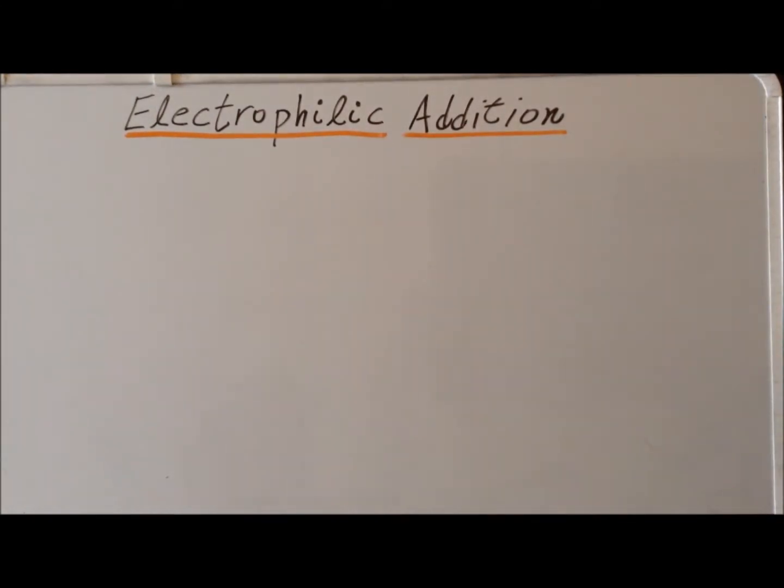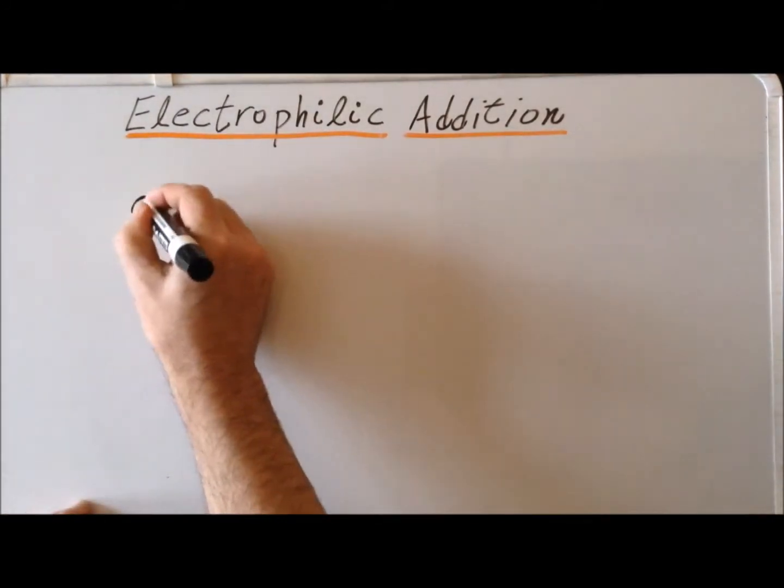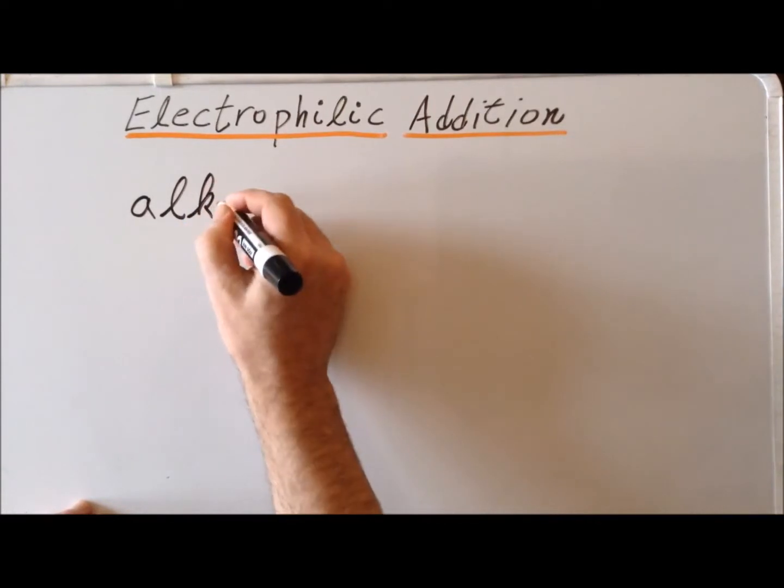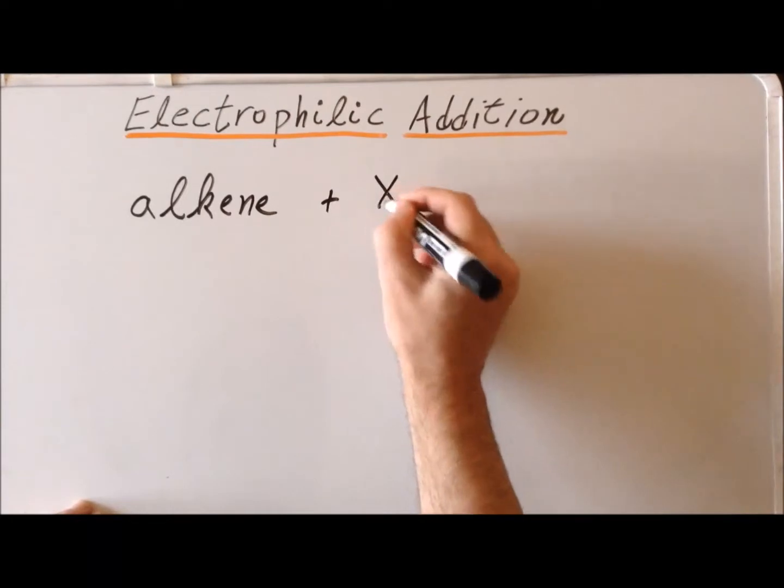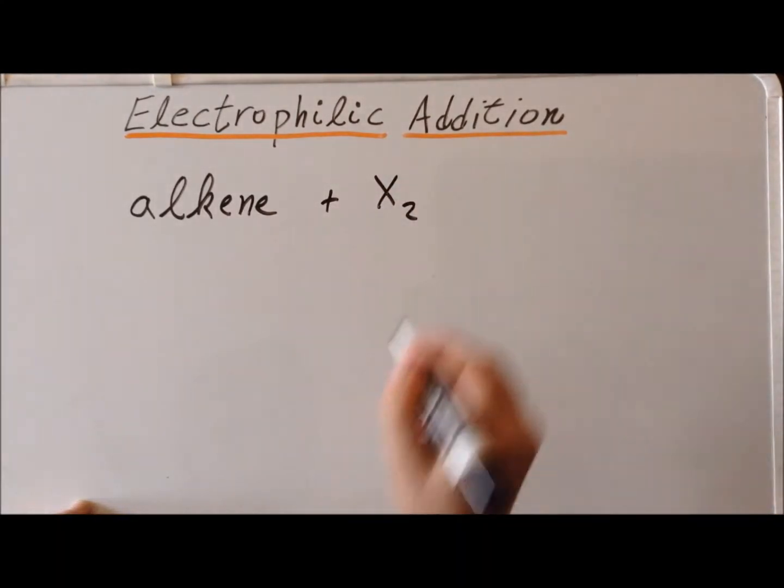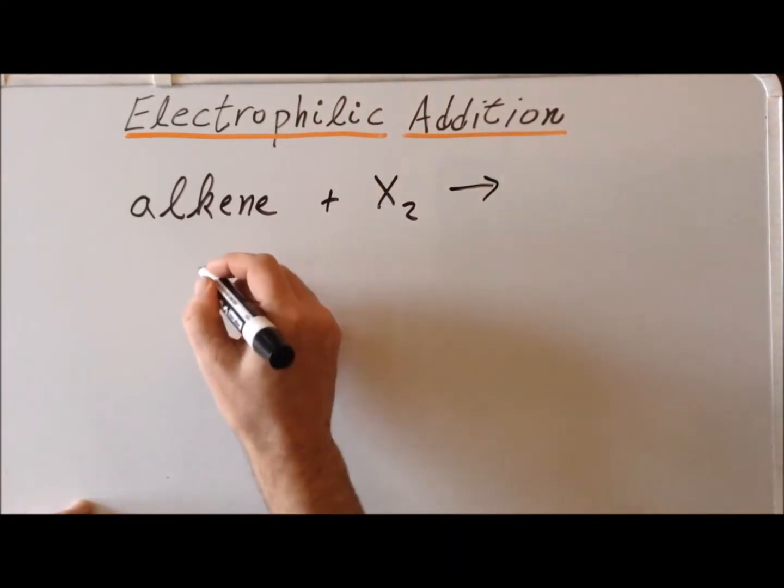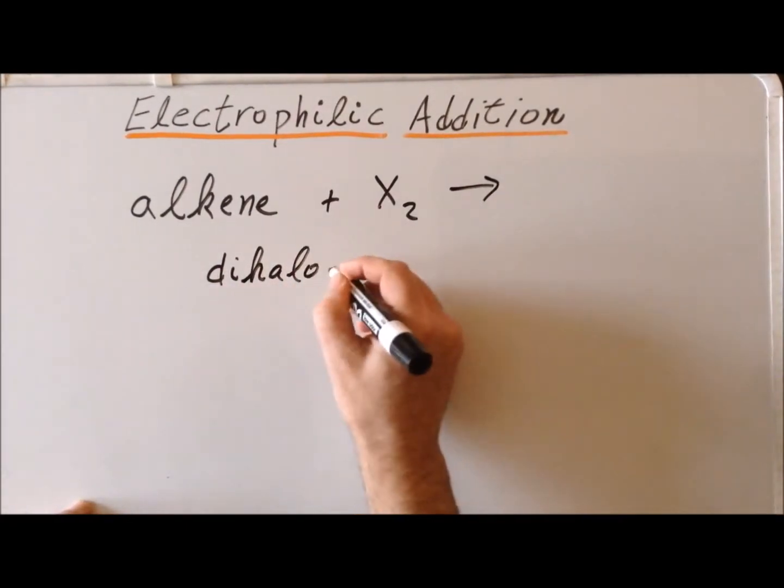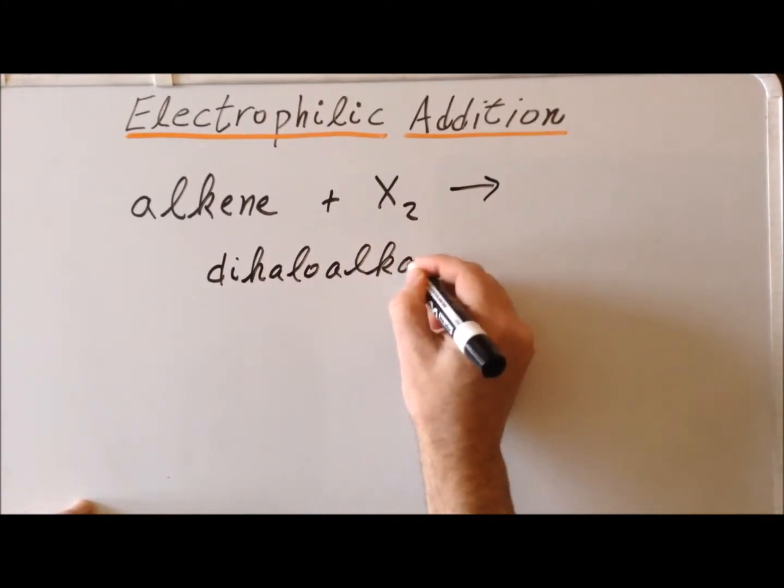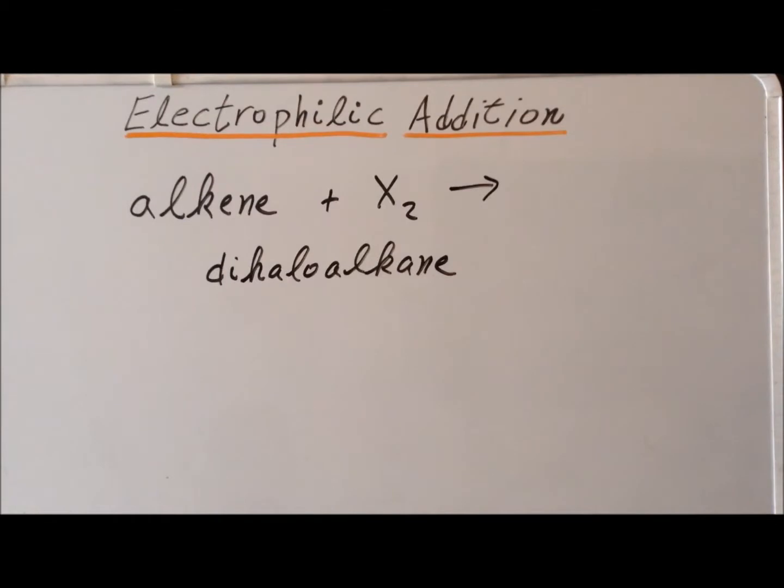The overall reaction that we are considering involves a reaction of an alkene with a halogen, either chlorine or bromine, and the product of the reaction is going to be a dihaloalkane that is specifically a vicinal dihalide, meaning that the halogens are going to be on neighboring adjacent carbon atoms in the dihaloalkane.